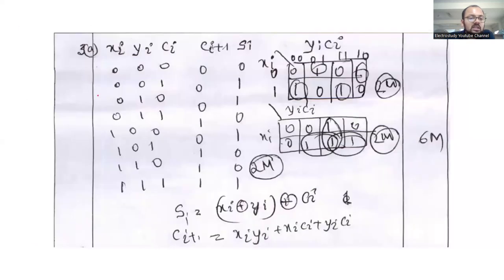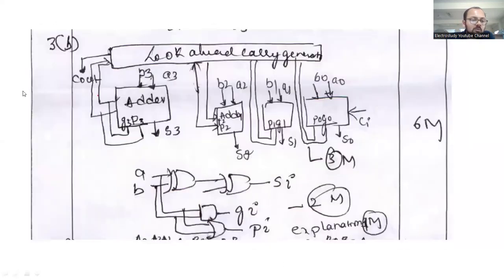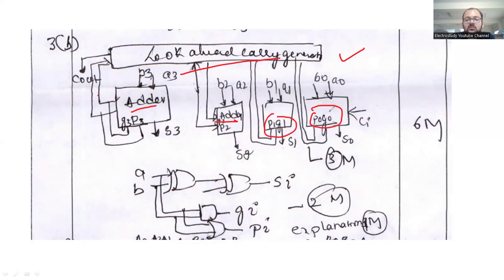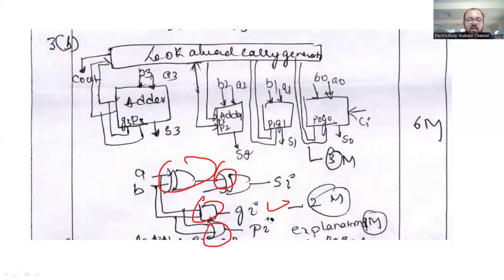Question number 3b: explain the carry look-ahead adder with the general and sigma block. This is a theory part requiring a block diagram. Draw and mark different segments — adders, look-ahead carry generator — and label p1, g1, p0, g0 and corresponding inputs. Also draw the logic diagram using XOR, AND, and OR gates with a suitable explanation. Present neatly.